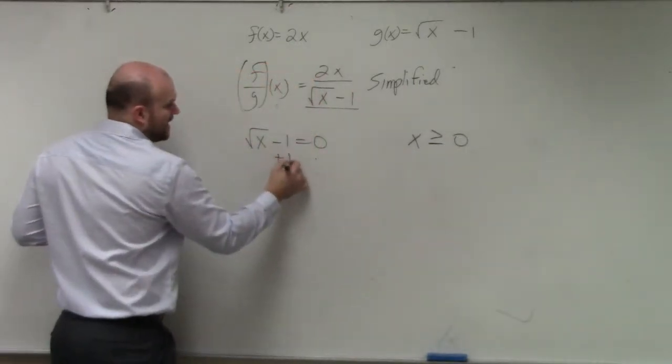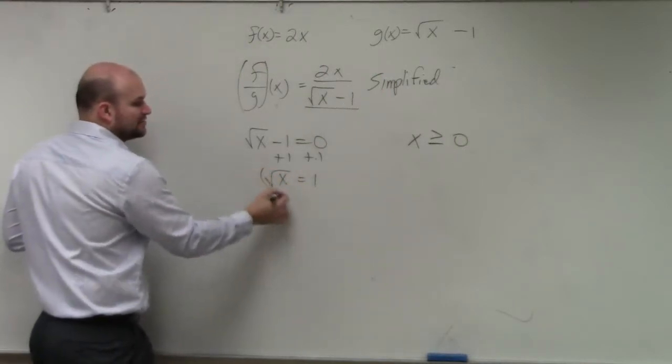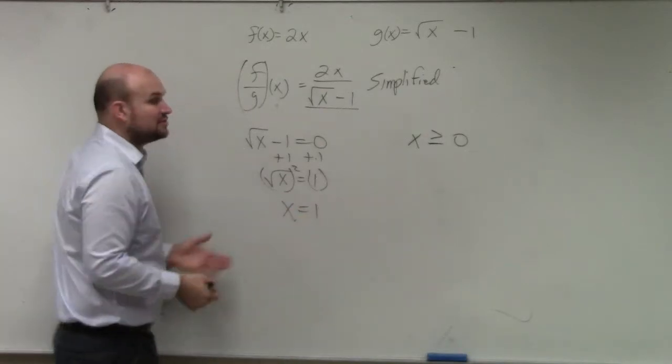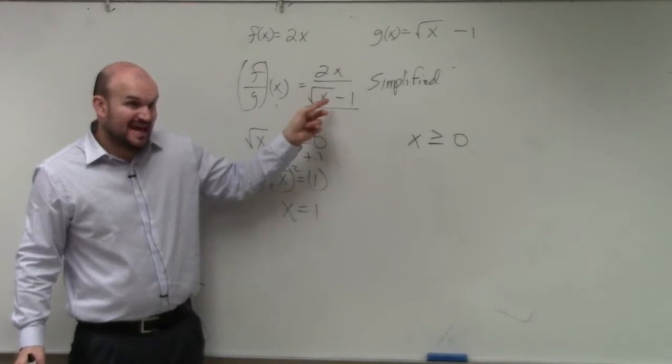So here I solve, I add 1, add 1. Square root of x equals 1. Now to undo the square root of x, I square both sides. So x equals 1. Therefore, when x is equal to 1, does that make my denominator equal to 0? Yes.